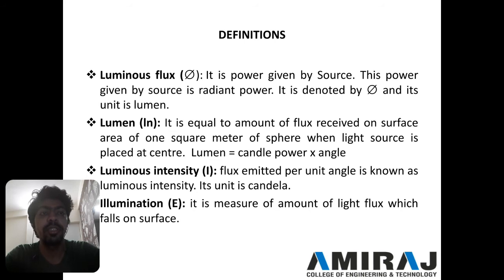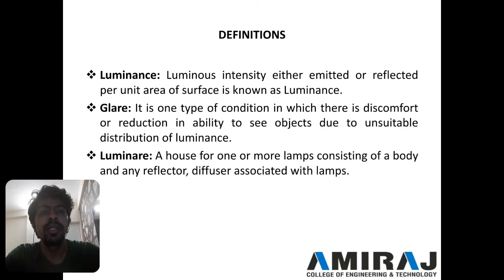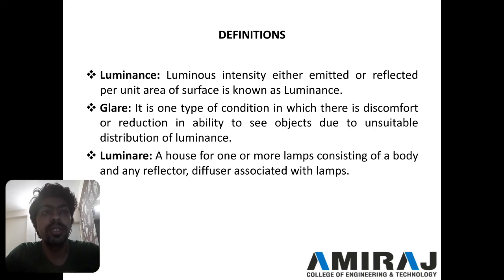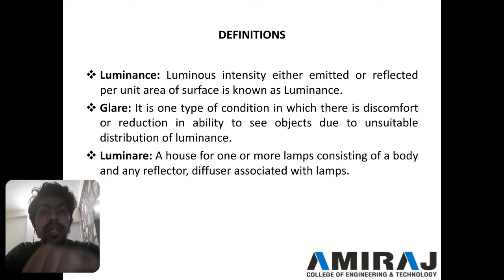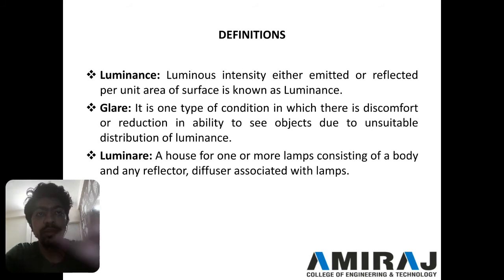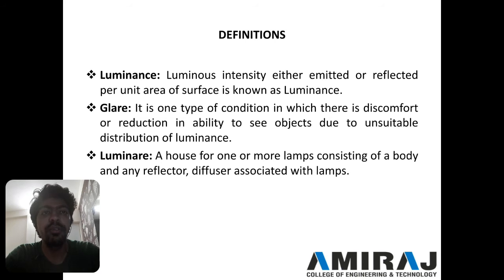Illumination is a measure of the amount of light flux — the luminous intensity which falls on the surface. Next, luminance is either the luminous intensity emitted or reflected per unit area of a surface.